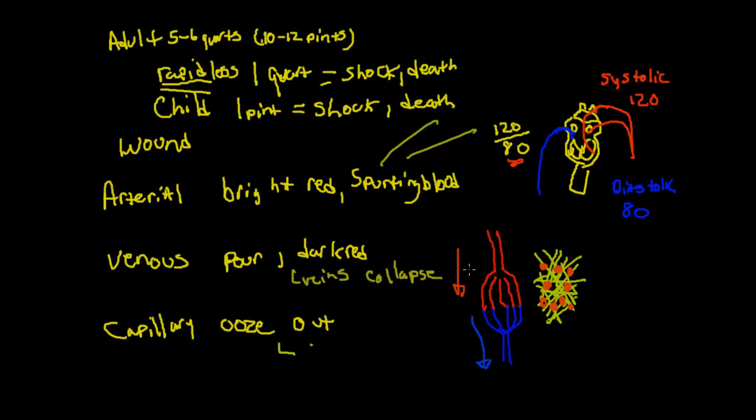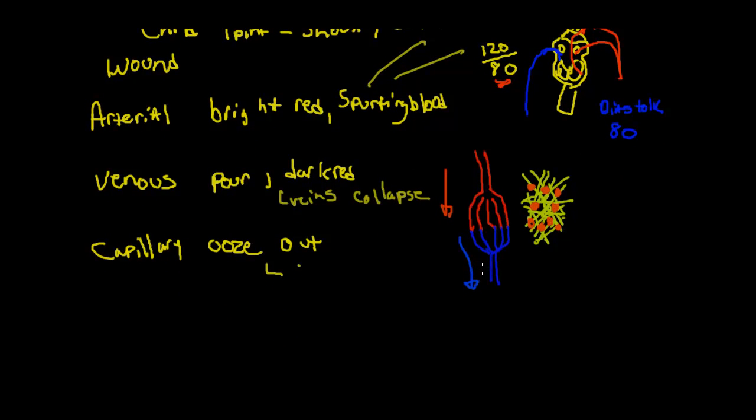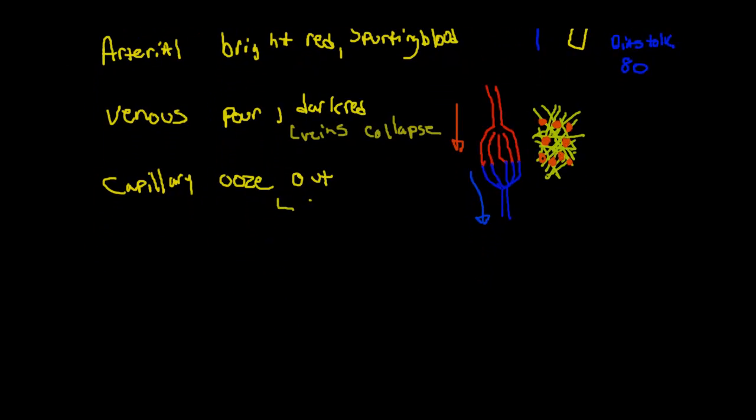Before I move on, we also have natural responses. Your body has a natural response to bleeding to try to stop it. Your natural response of the body is a spasm. Blood vessels will spasm, and when they do, they'll draw back. They'll draw up into the body. Now, sometimes, if the artery is not completely severed, it won't draw back.